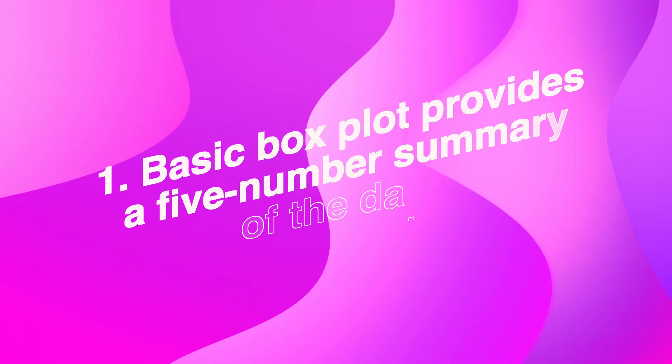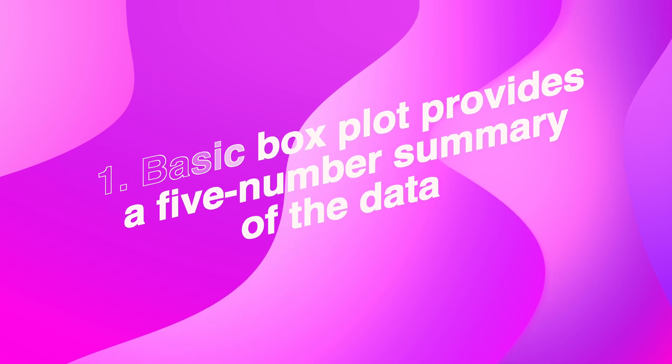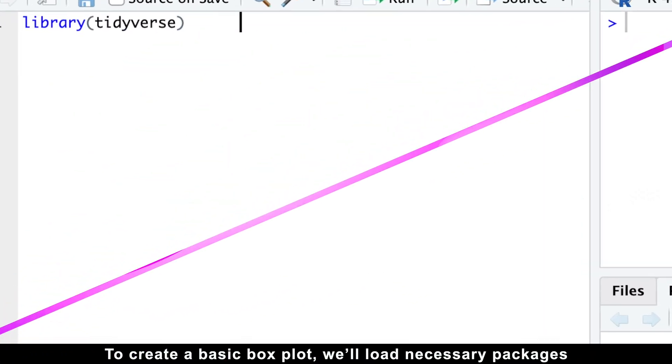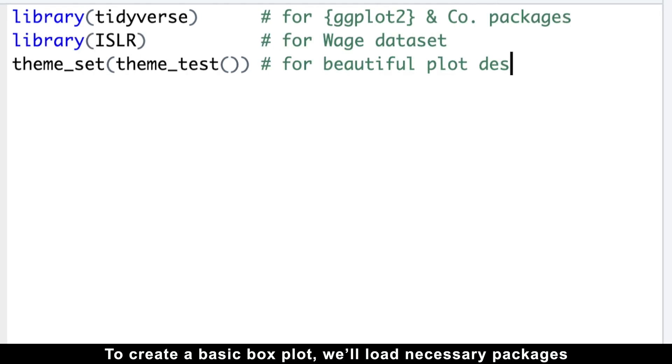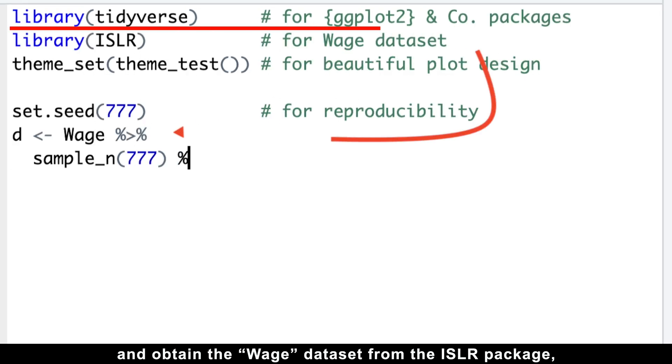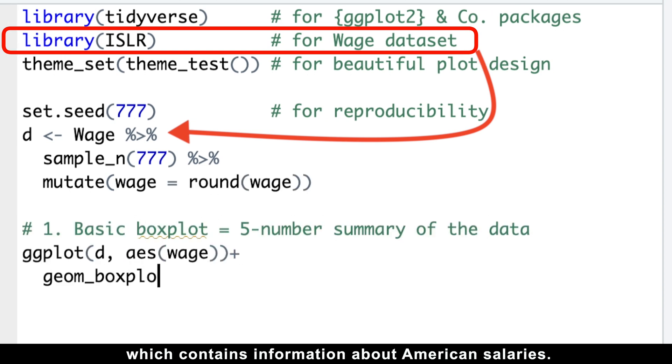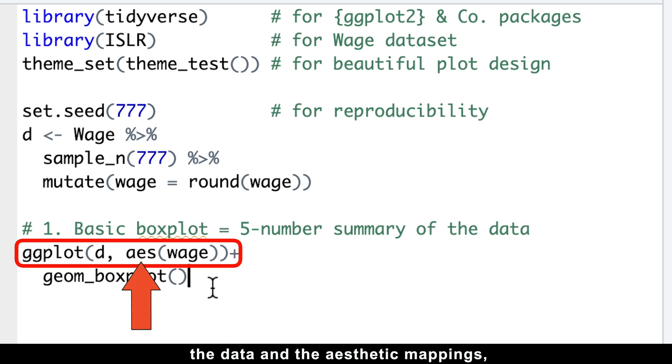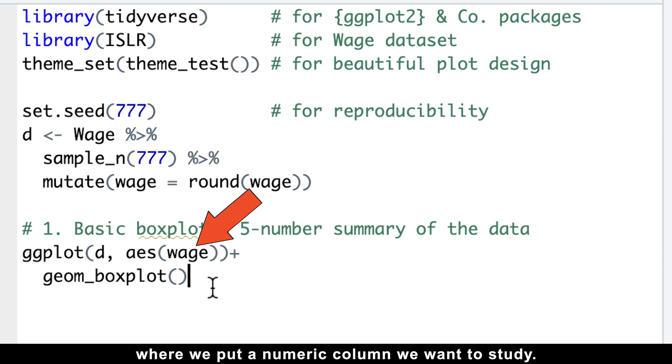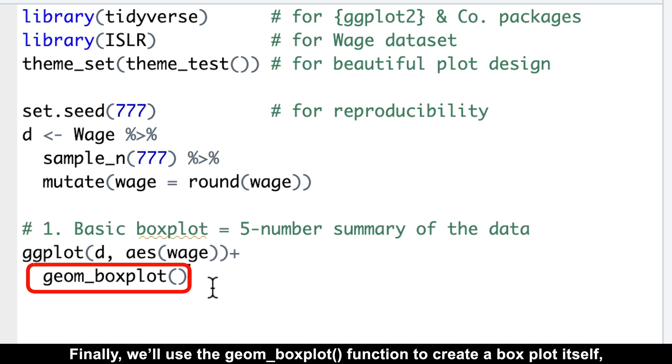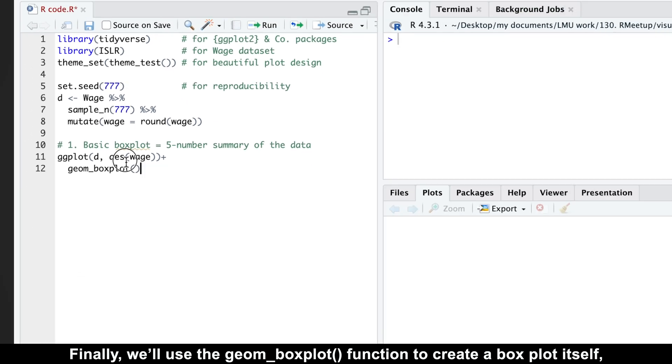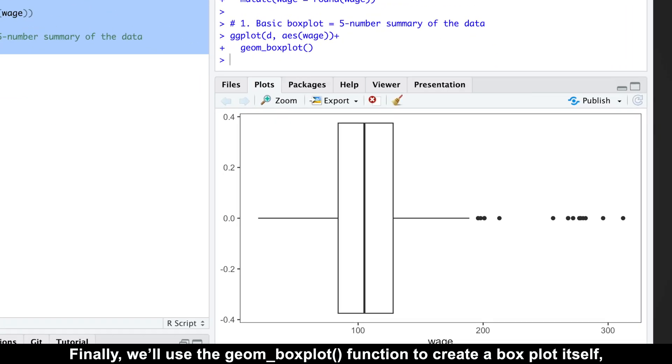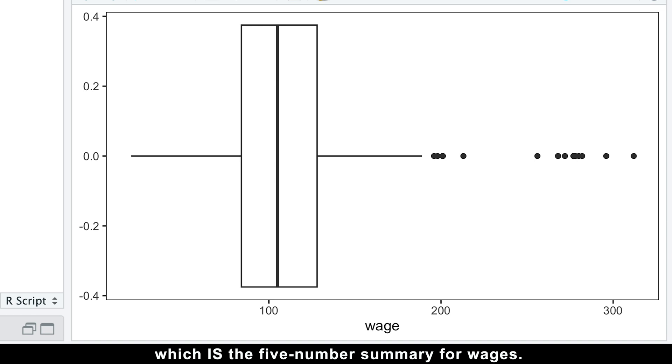For instance, the basic box plot provides a five-number summary of the data. To create a basic box plot, we'll load necessary packages and obtain the wage dataset from the ISLR package, which contains information about American salaries. We'll then use the ggplot function with two arguments, the data and the aesthetic mappings, where we put a numeric column we want to study. Finally, we'll use the geom_boxplot function to create a box plot itself, which is the five-number summary for wages.